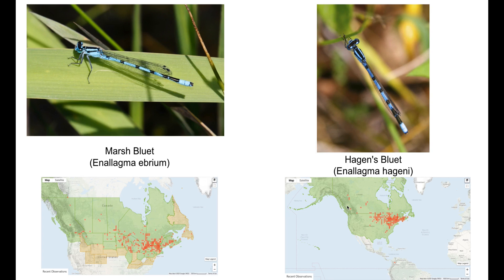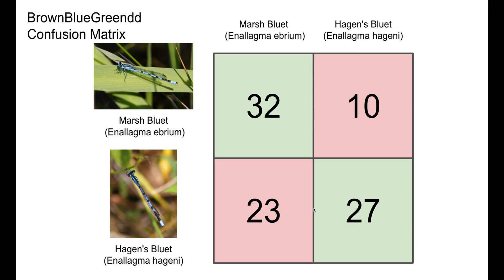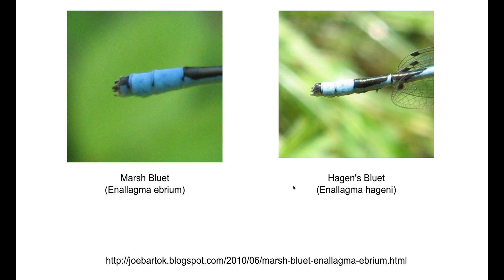Finally, the last example is a pair of damselflies, which again show a significant range overlap, so the location and date information is probably not super relevant, and again we see significant confusion between these pairs from the top team. A quick Google search reveals that one way to classify these species is to zoom in and focus on the claspers found at the end of the tails. The Marsh Bluet has forked claspers, while the Hagen's Bluet has triangular, slightly upturned claspers — a fine-grained classification problem to say the least.